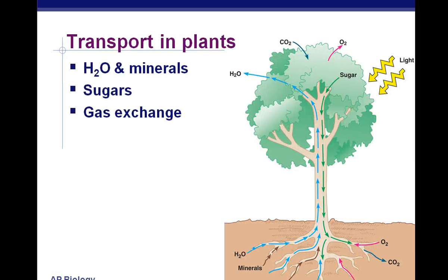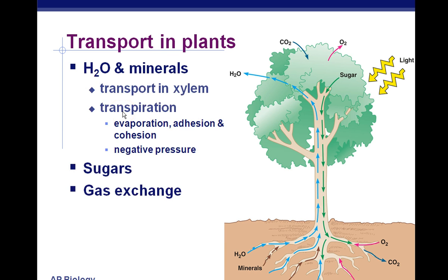Transport in plants — here are some of the things that plants transport: water and minerals, sugars, and gas exchange. Water and minerals are transported via the xylem. Remember, xylem has two parts: tracheids, which are thinner, and the vessel elements, which are thicker. A way to help you remember that is 'the vet plays the xylophone' — V for vessel, E for element, T for tracheids, and xylophone helps you remember xylem. Transpiration is a combination of three things: evaporation, adhesion, and cohesion.